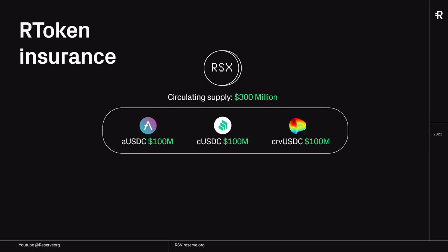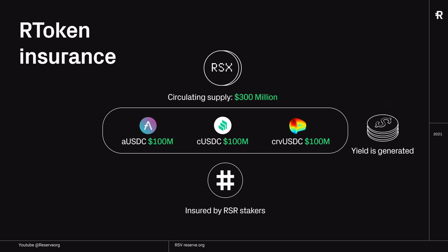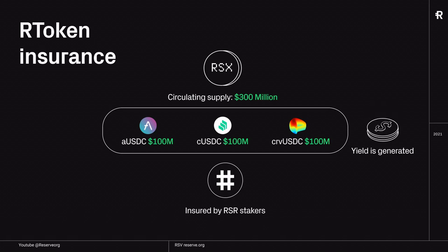We think we need some kind of insurance mechanism, and that is where the RSR insurance comes in. This stablecoin will be insured by RSR stakers. A cool feature about this setup is that this stablecoin will automatically generate yield. I'm not going to go into detail of how the R token generates yield, but I will add a link in the YouTube description in case you want to read up on that. Basically, some money is being generated with this setup.